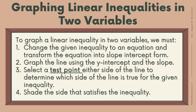Now let's move on to our lesson — graphing linear inequalities in two variables. First, change the given inequality to an equation and transform it into slope-intercept form. Second, graph the line using the y-intercept and the slope. Third, select a test point on either side of the line to determine which side is true for the given inequality. And fourth, shade the side that satisfies the inequality.